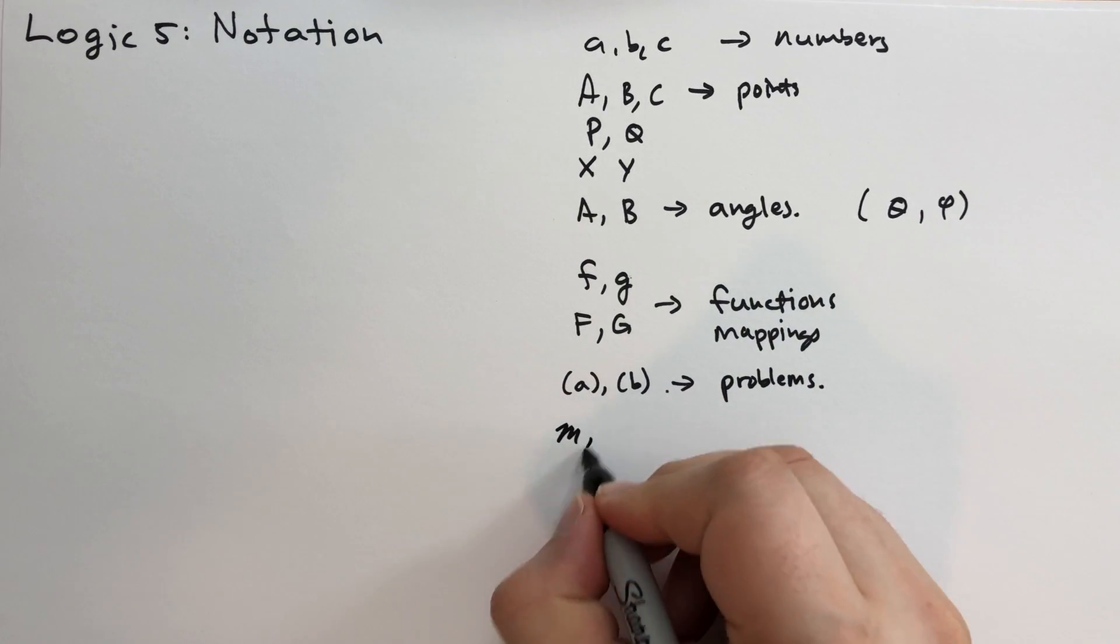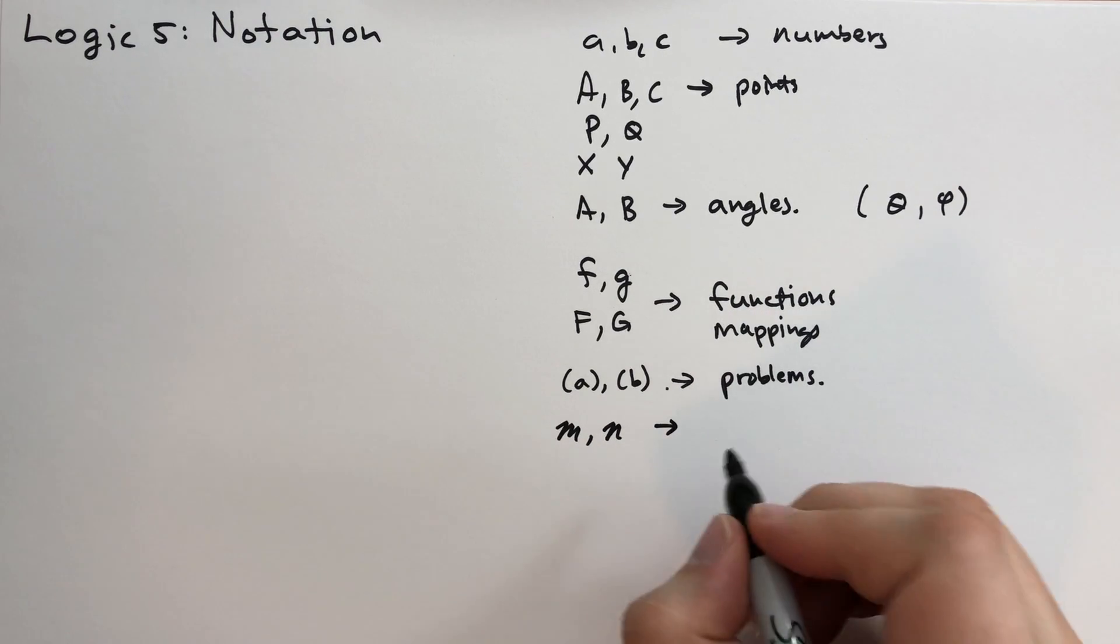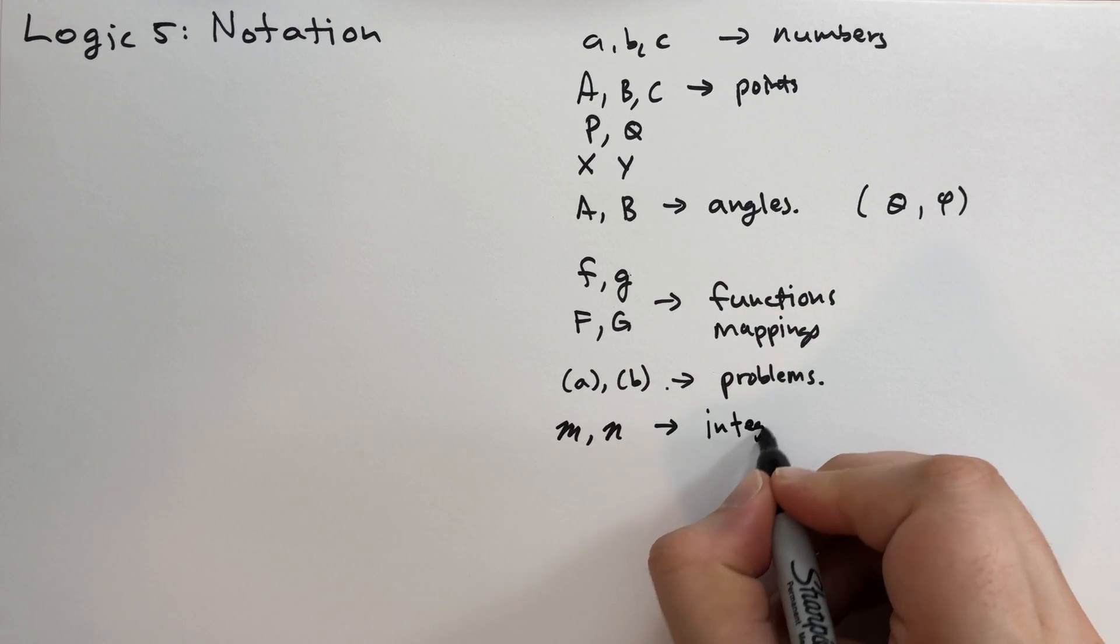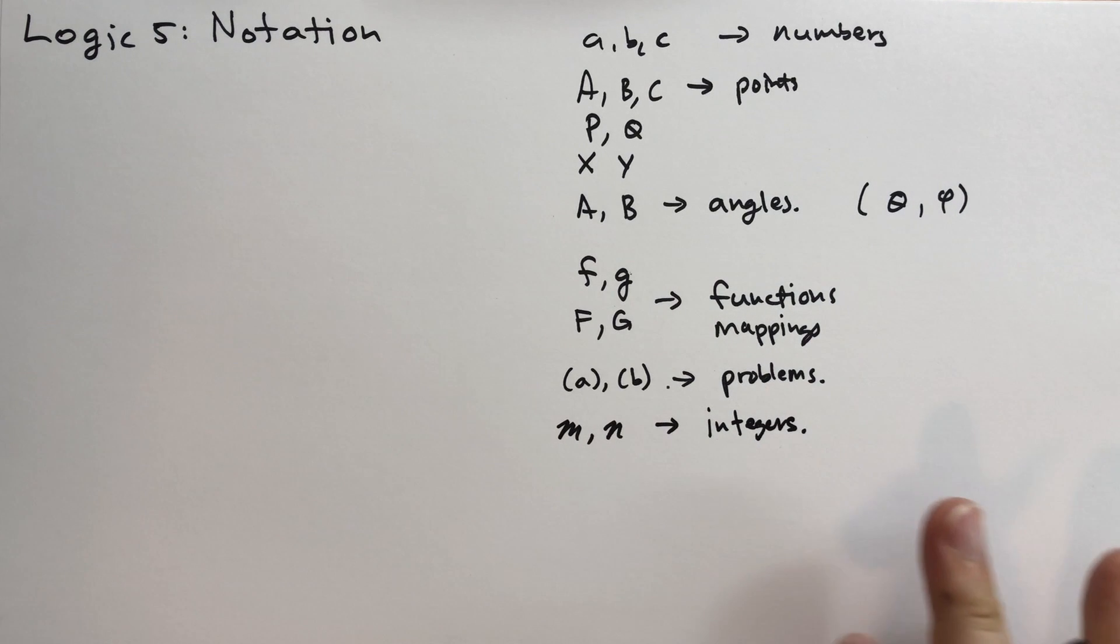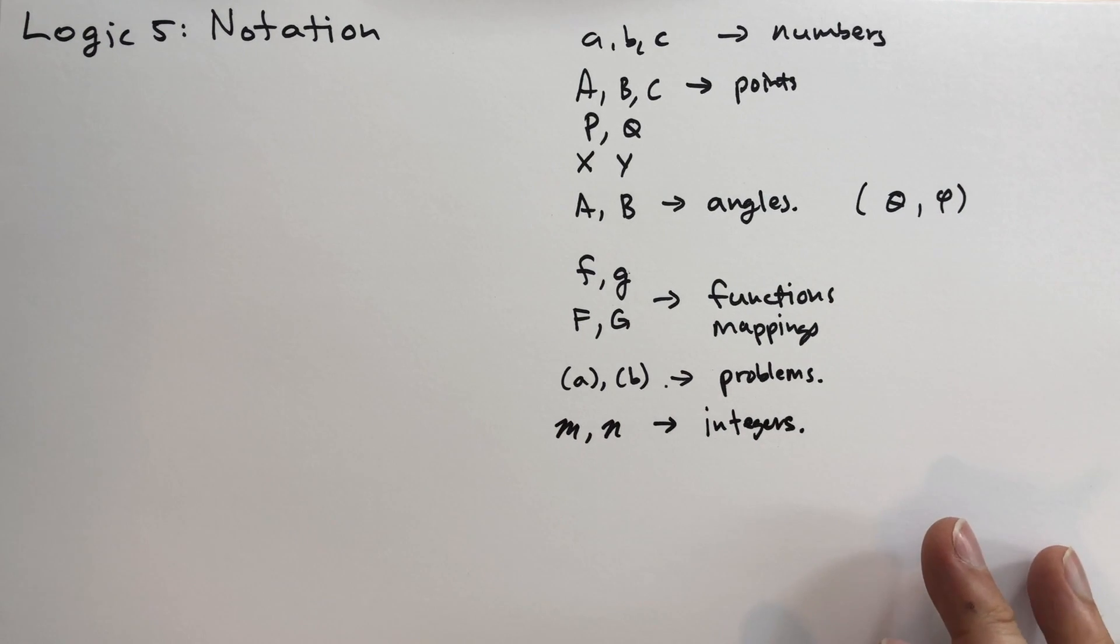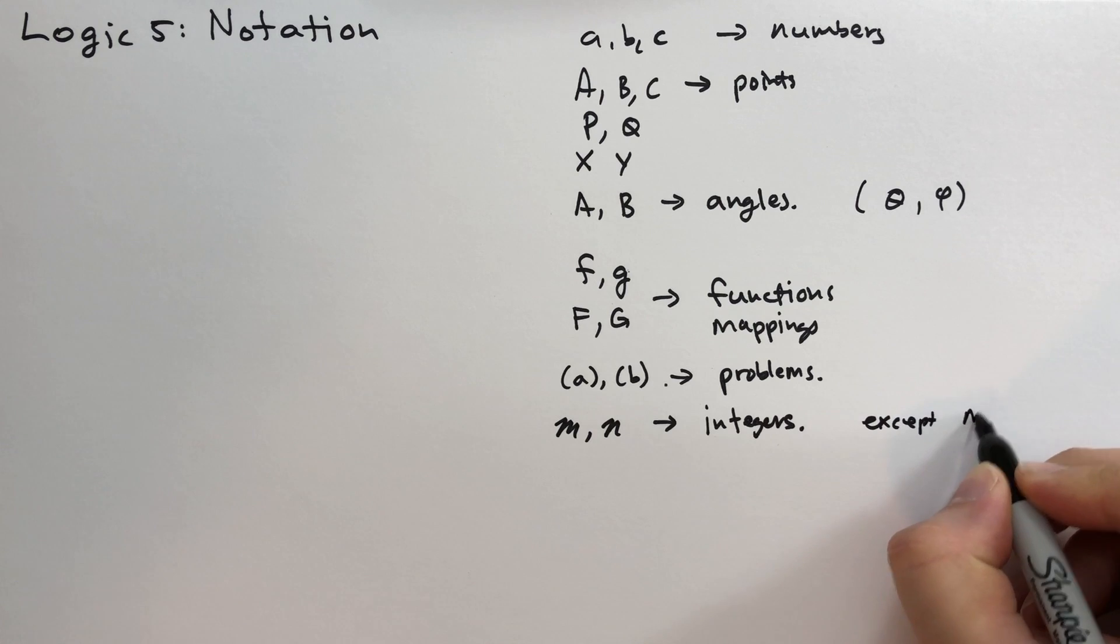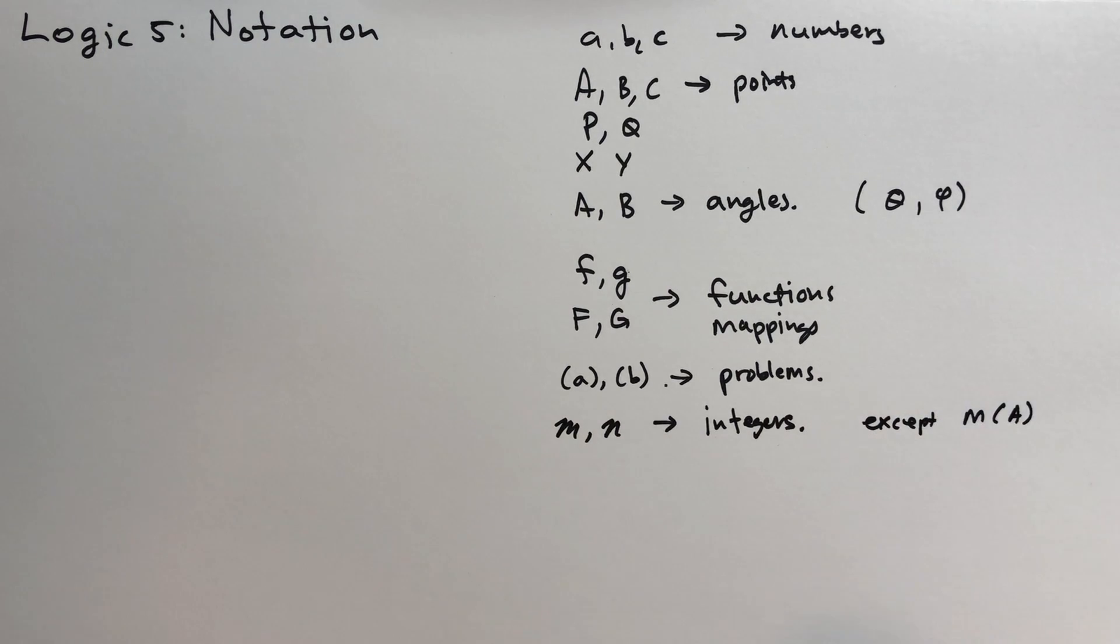In italics, and I can't write italics here, but M and N in italics would usually mean integers. And where they use abbreviations for words, M is sometimes used as abbreviation for the measure of an angle A. So except for m(A), which is the measure of an angle, but that'll be clear when it's done.